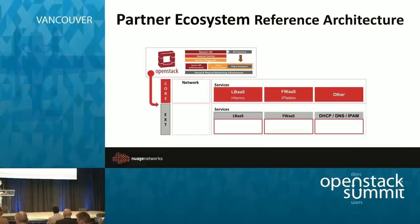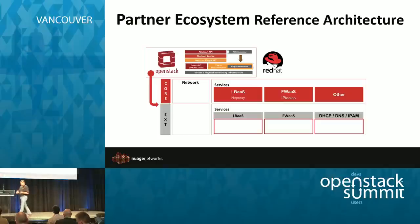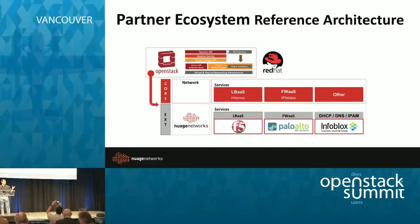OpenStack's Neutron offers core capabilities and allows you to extend those capabilities, and this is what we're taking advantage of. For the first reference architecture, we're using Red Hat OpenStack Platform 6. We inject our SDN layer into the extensions of Neutron, and we have partnered with F5 for Load Balancer as a Service, Palo Alto Networks for Firewall as a Service, and Infoblox for DHCP, DNS, and IPAM. All of that runs as an integrated service — a complete networking solution based on leading companies in the networking space, suitable for enterprise or service provider data centers.